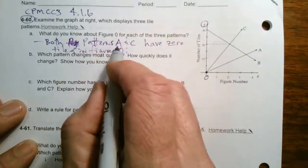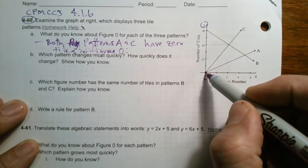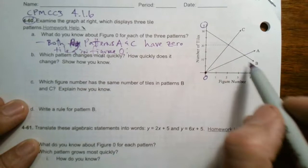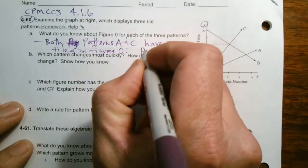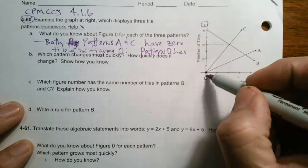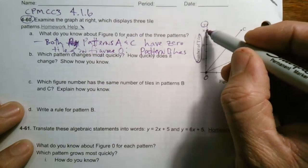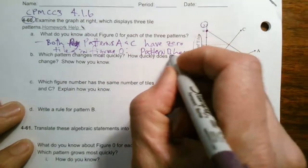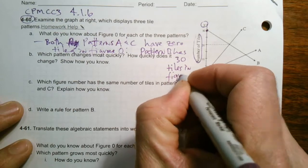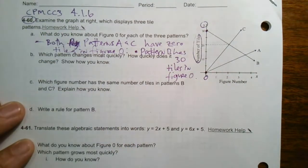So both patterns A and C, here's A and here's C. So both of those patterns, by the fact that they are at the 0, 0, they're at the origin, have 0 tiles in figure 0. So then the last one, B, what about pattern B? So pattern B has how many? Well, at the 0, we go all the way up to here to, it looks like 30. This represents the number of tiles, the Y does. So it looks like there's 30 in figure 0. So pattern B has 30 tiles in figure 0.